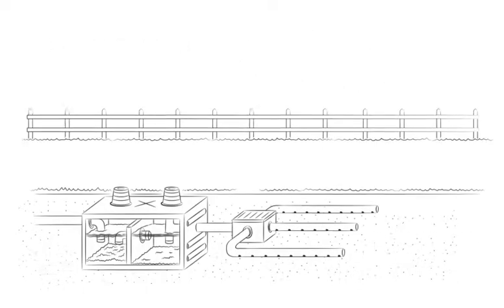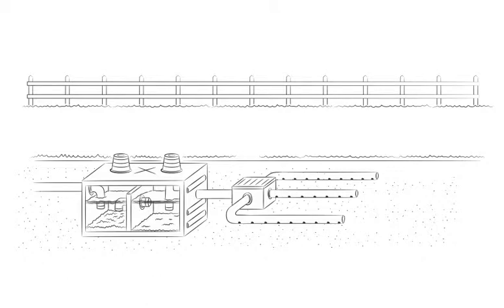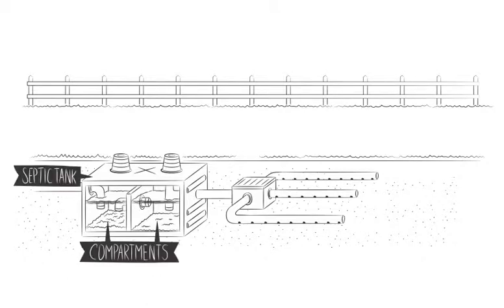Let's take a look underground. The basic components of septic systems are the septic tank, compartments, the distribution box or D-box, and the drain field.